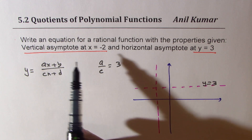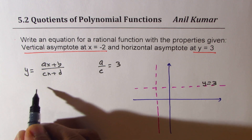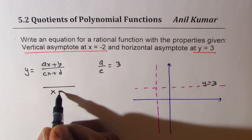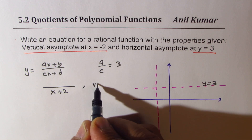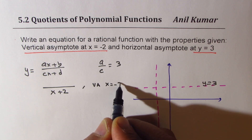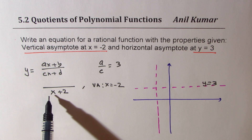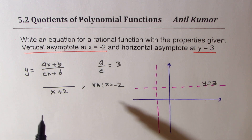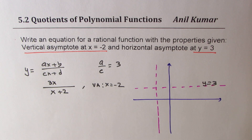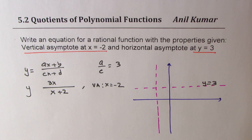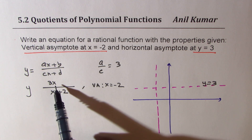Vertical asymptote at x equals -2 means cx plus d should be x plus 2. Since the coefficient of x is 1, c should be 3, so we get 3x in the numerator. So that equation works for us — that could be one of our solutions. If I write x equals 0, I get positive 3 over 2, which is less than 3.